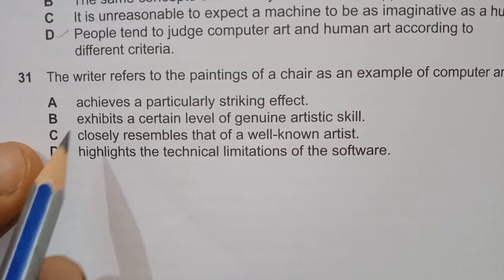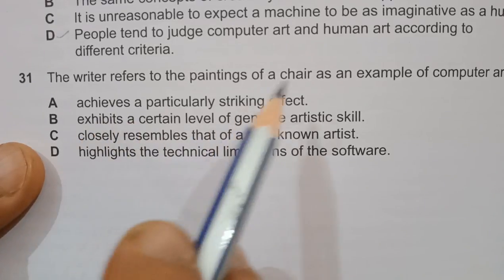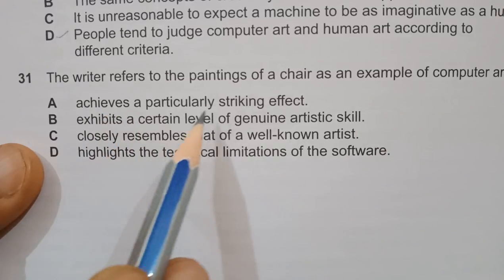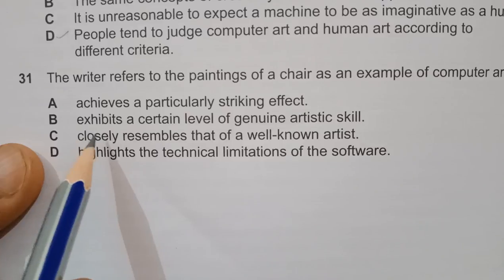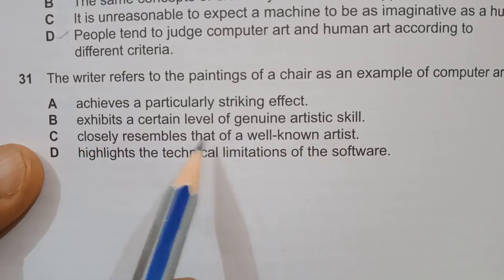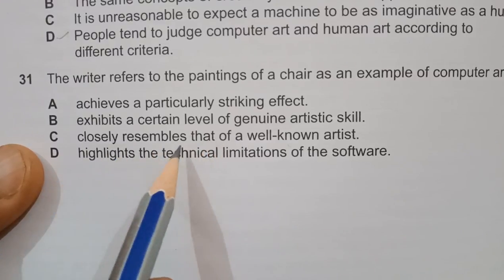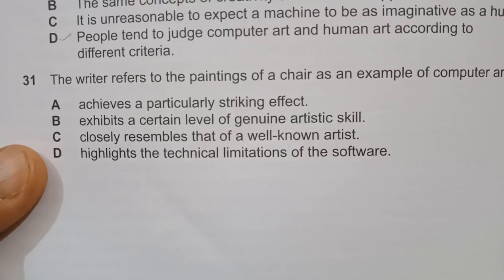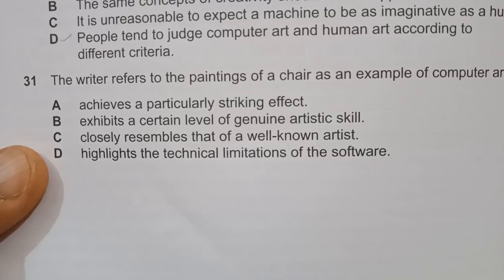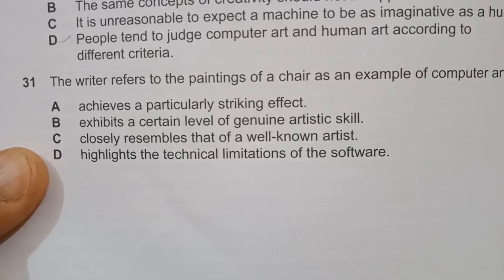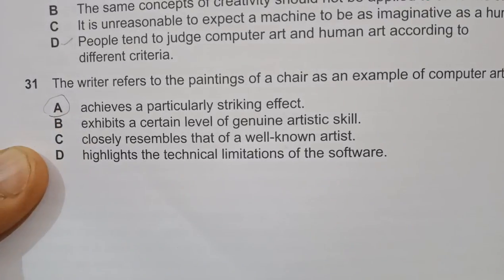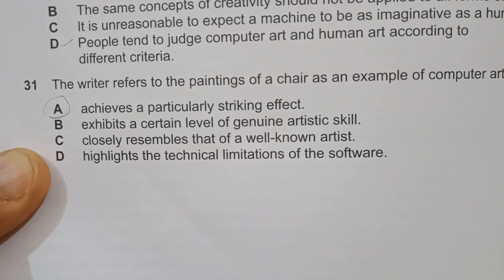So what the options are: A — achieves a particular striking effect; B — exhibits a certain level of genuine artistic skill; C — resembles that of a well-known artist; D — highlights the technical limitations of software. The chair was painted in black and white by mistake, creating a contrast and eerie effect. Option A — achieves a particular striking effect — has the highest possibility, referring to the black and white contrast effect. Option B — genuine artistic skill — nothing closely mentioned. Option C — resembles a well-known artist — not discussed. Option D — highlights technical limitations — no complaint made regarding the software fault as a limitation. So the answer is A, achieves a particular striking effect.